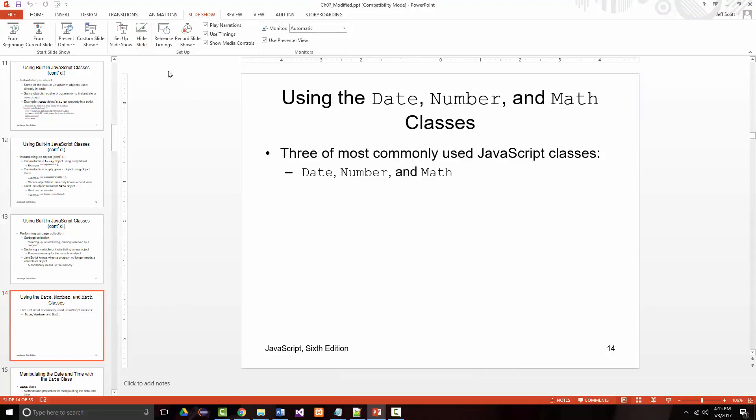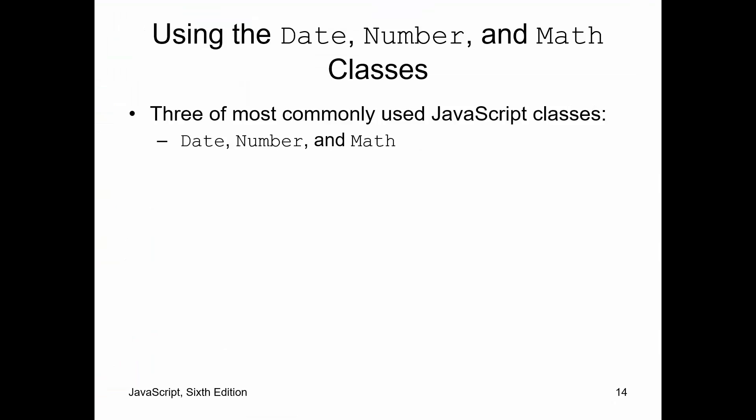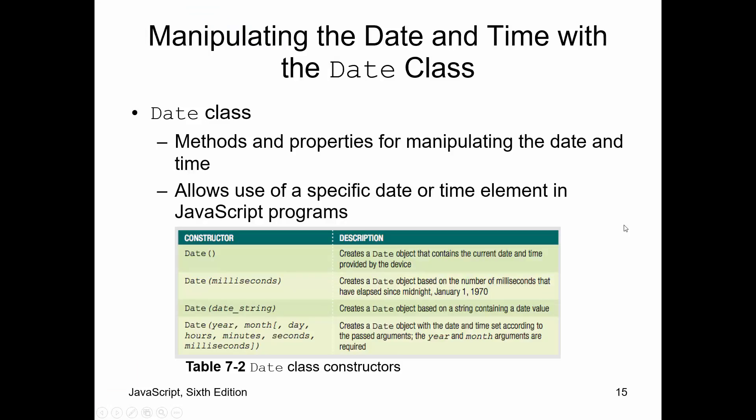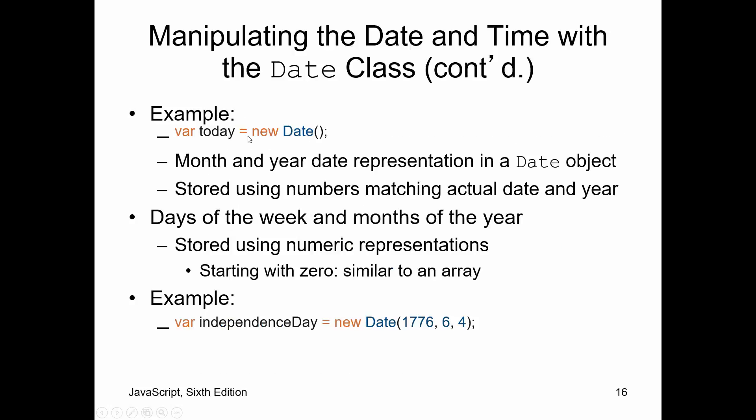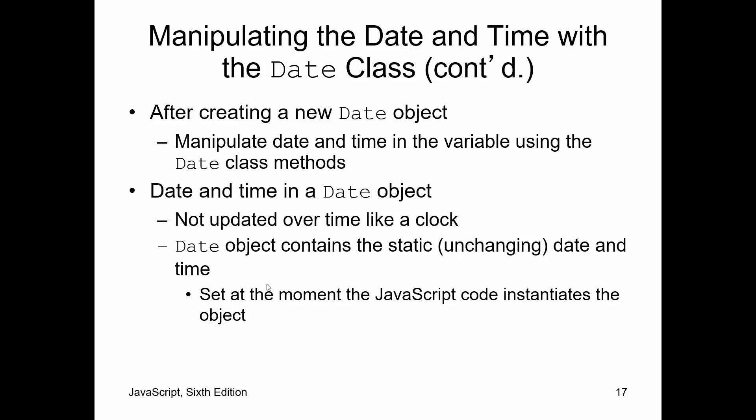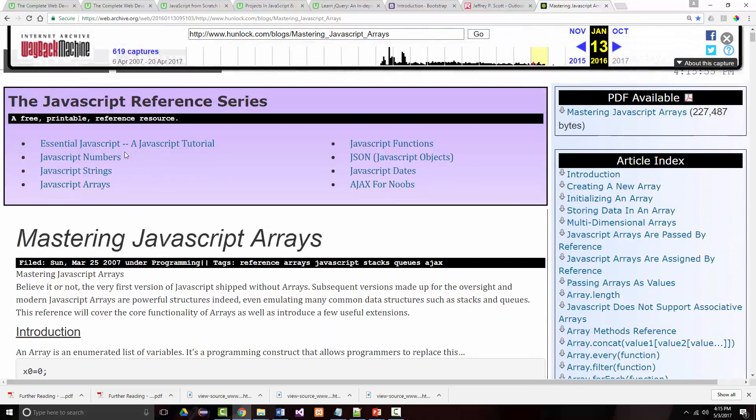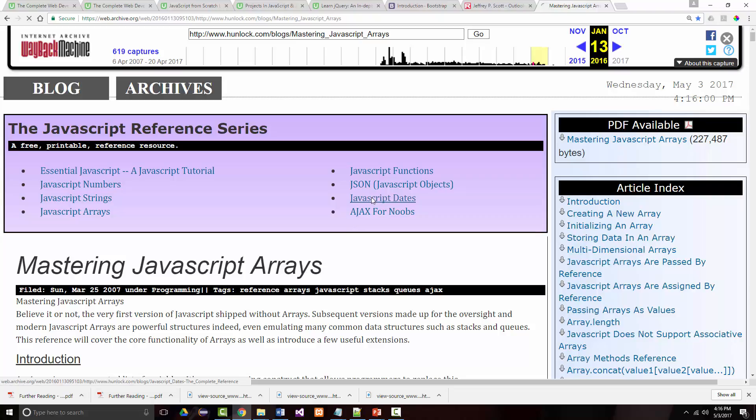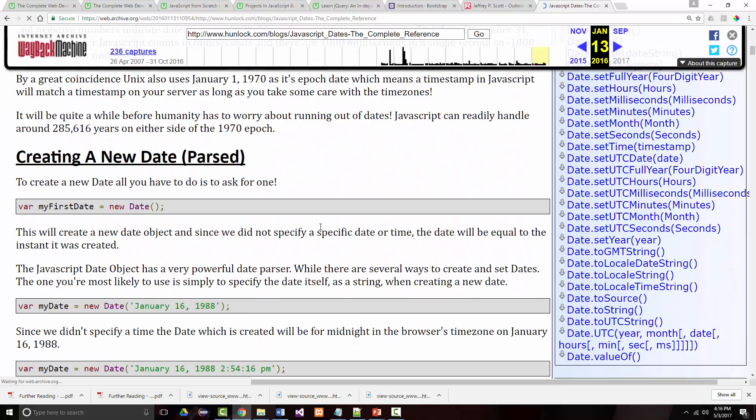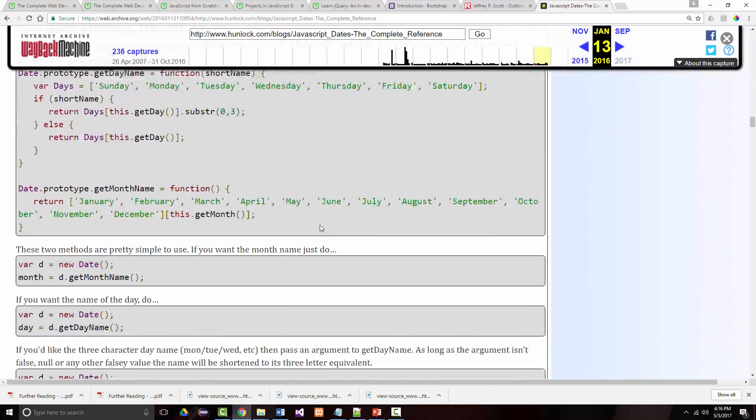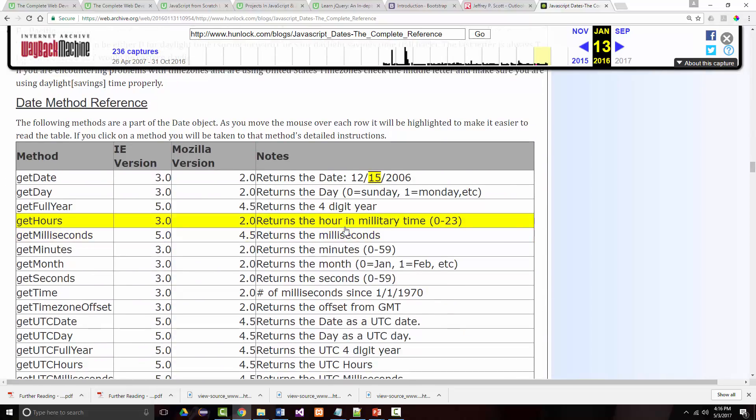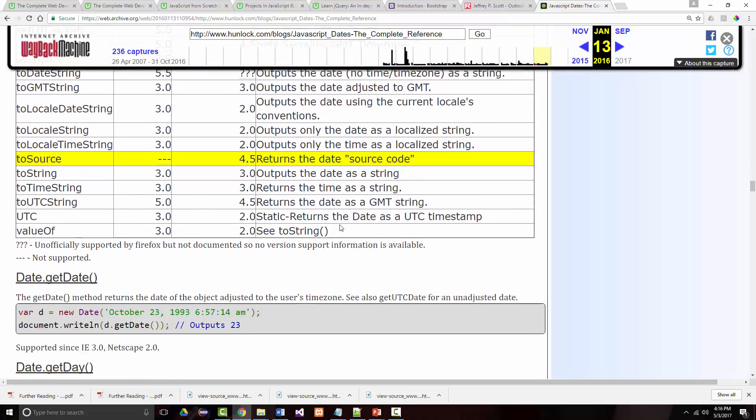So three of the most commonly used JavaScript classes are the date class to give you dates, and you can get the time from it too, the number class, and the math class. So the date class, by default, when you create a new date object, you get the current date and the current time. There's all sorts of ways, and you can grab all sorts of pieces from it. So if you only wanted, so this gives you the current date and time. And there's other things that you can do with a date object. Again, sorry to keep doing this, but if I go back to where I just showed you, and if I jump back here under this HunLock site and I go to JavaScript dates. Dates, the complete reference. How to create dates, different types of dates, making date timers.